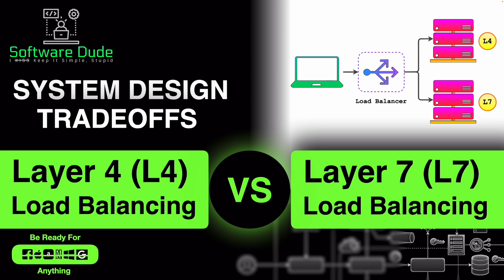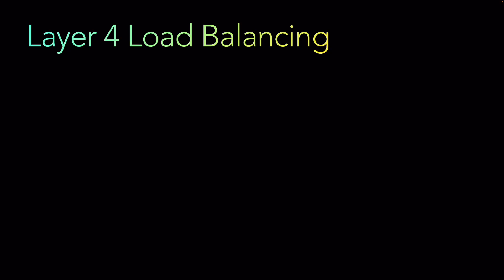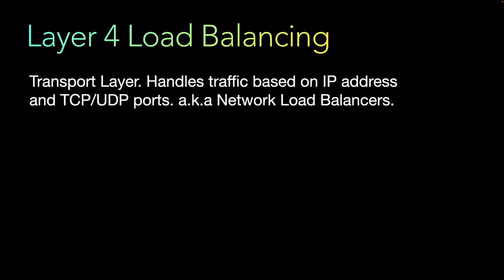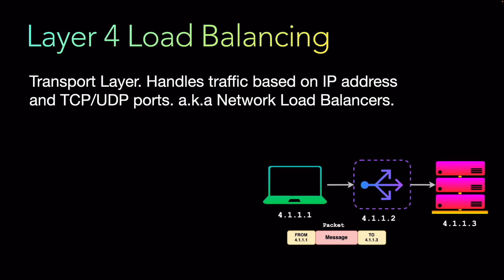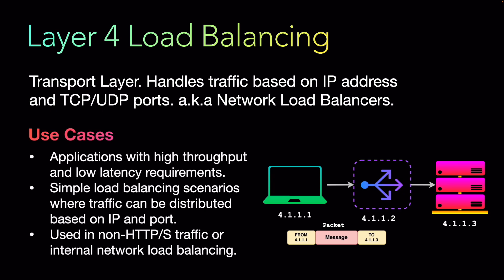Layer 4 load balancers operate at the transport layer, handling traffic based on IP address and TCP/UDP ports. They are also known as network load balancers. Use cases include applications with high throughput and low latency requirements, simple load balancing scenarios where traffic is distributed based on IP and port without inspecting message content, and primarily non-HTTPS traffic or internal network load balancing that is not public-facing.